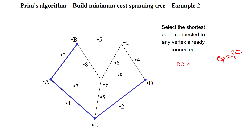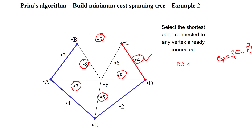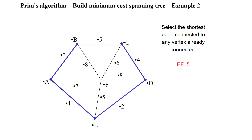The spanning tree now has 4 vertices connected. From these 4 vertices, we evaluate the next minimum edge: 5, 8, 4, 5, 8, and 7. The minimum weight is 4, the distance between D and C. We select edge D-C and add it to the spanning tree, then remove C from the priority queue. The queue now has only one vertex, F.